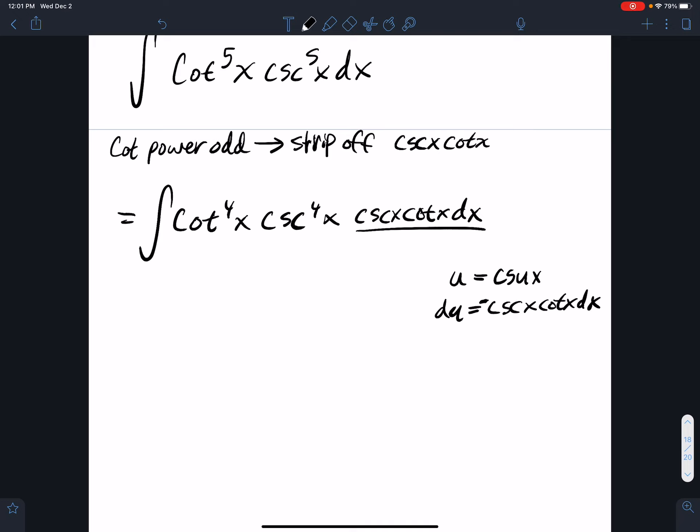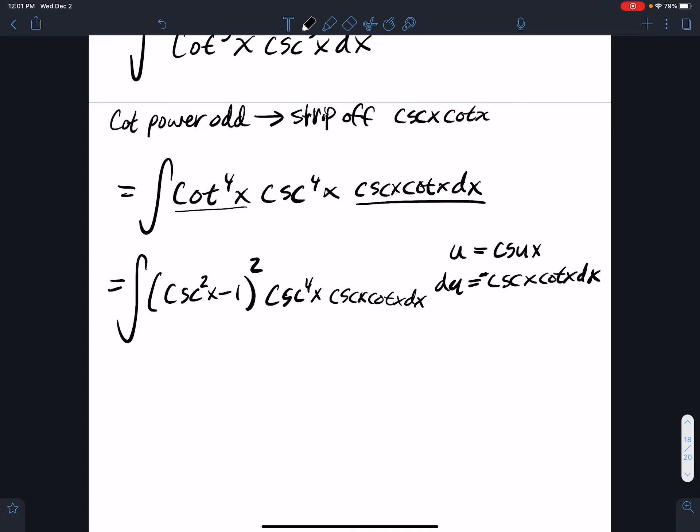So what are we going to do here? Well I need to convert everything to be in terms of cosecant, so that cotangent there turns into cosecant squared x minus one all squared, and then cosecant to the fourth x, and then cosecant x cotangent x dx. And so now I'm going to u sub and I have u squared